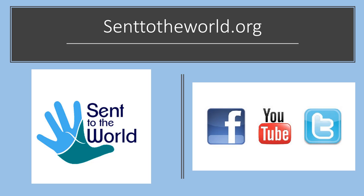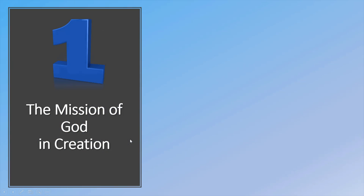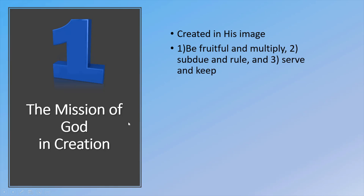So now let's begin with the first part: the mission of God in creation. From the beginning, as we see in Genesis chapters 1 and 2, God created a perfect world. He is a purposeful God and created man and woman in his image with purpose in mind. They were to: one, be fruitful and multiply; two, subdue and rule; and three, serve and keep all creation.